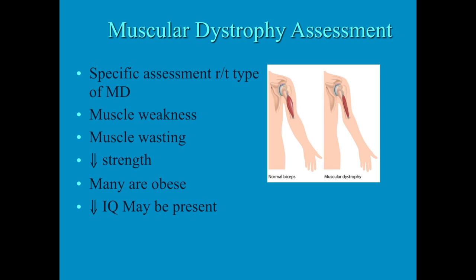The type of assessment findings will depend on the type of muscular dystrophy. Becker's muscular dystrophy has similar muscle wasting but it occurs later in childhood and has a much slower progression of weakness. Eventually all have a decrease in strength. Many end up being obese — there's nothing wrong with their appetite, they're fed by others, and they're not active enough to warrant all the calories. A decrease in IQ is possible but not common.